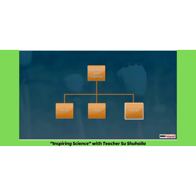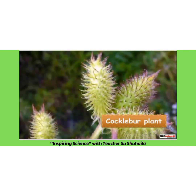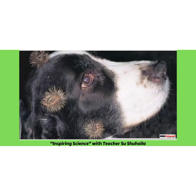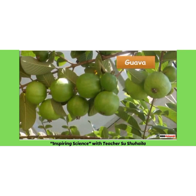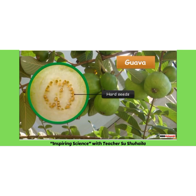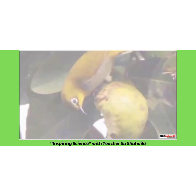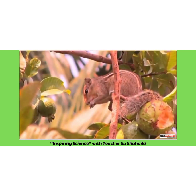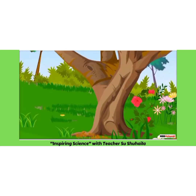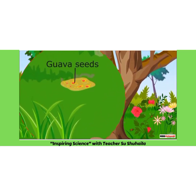Lastly, let's see how animals act as an agent for seed dispersal. Seeds of some plants, such as cocklebur, are surrounded by hooks or spikes which stick to the body of furry animals and are carried away. Some plants like guava have fruits with very hard seeds. These fruits are eaten by birds and animals like squirrels. The seeds are passed out through their droppings at places distant from the parent plant, and thus these seeds get dispersed.